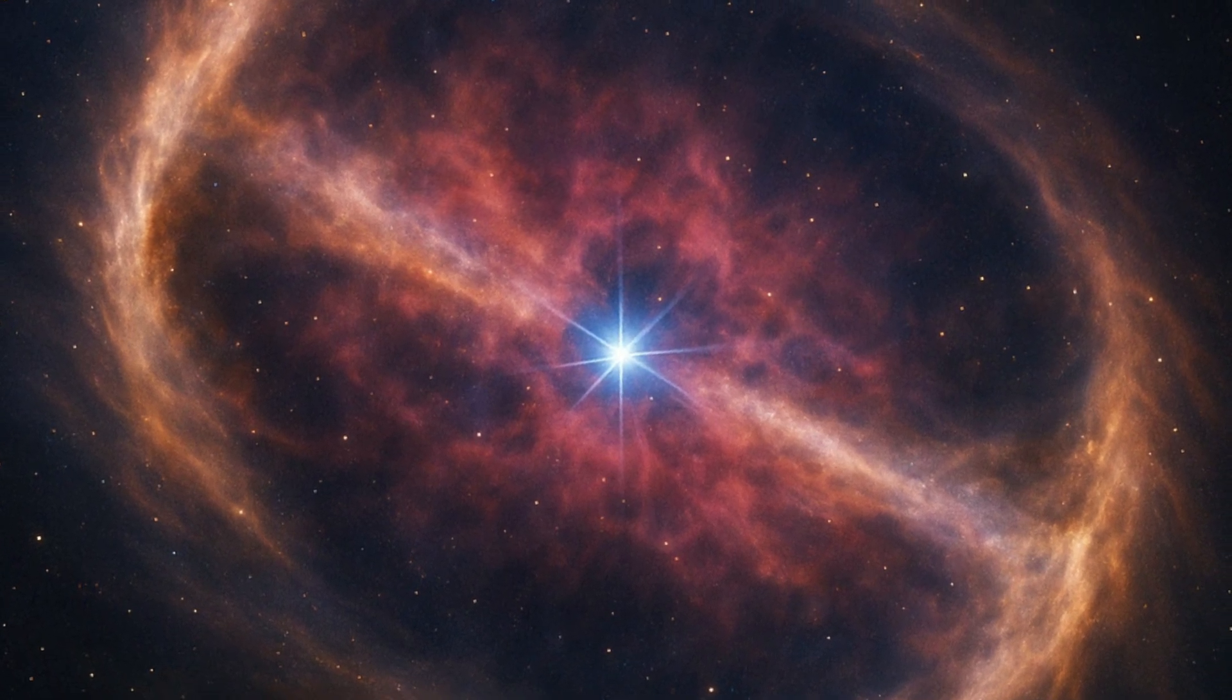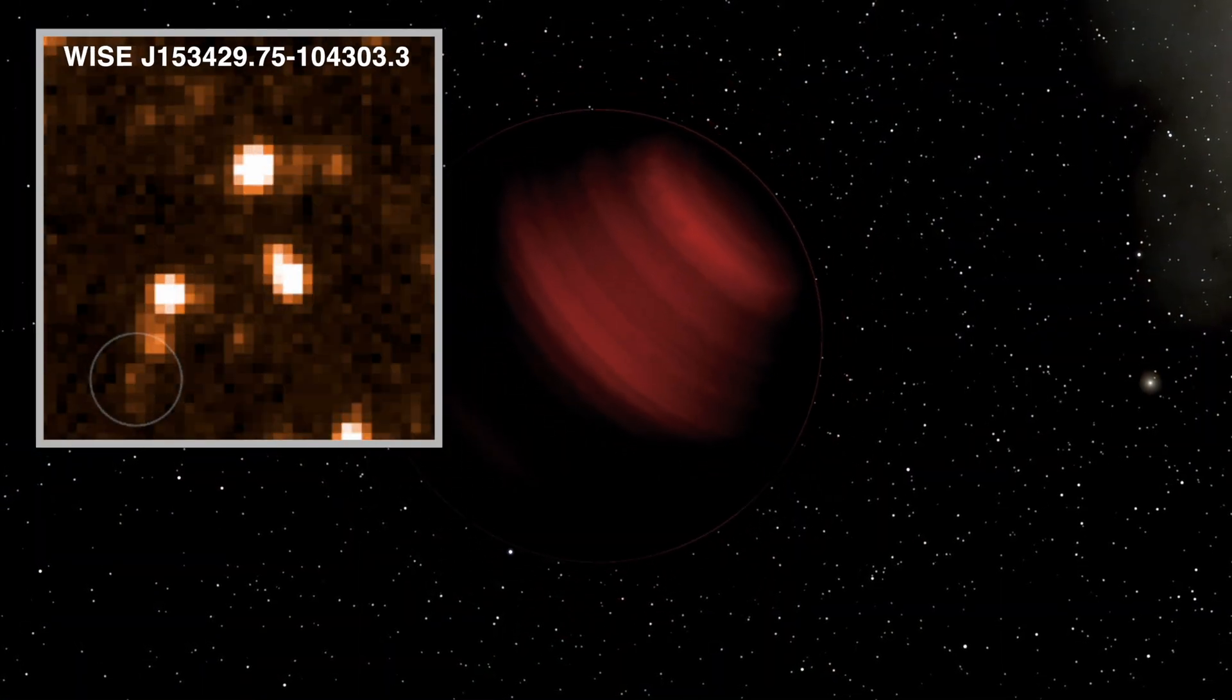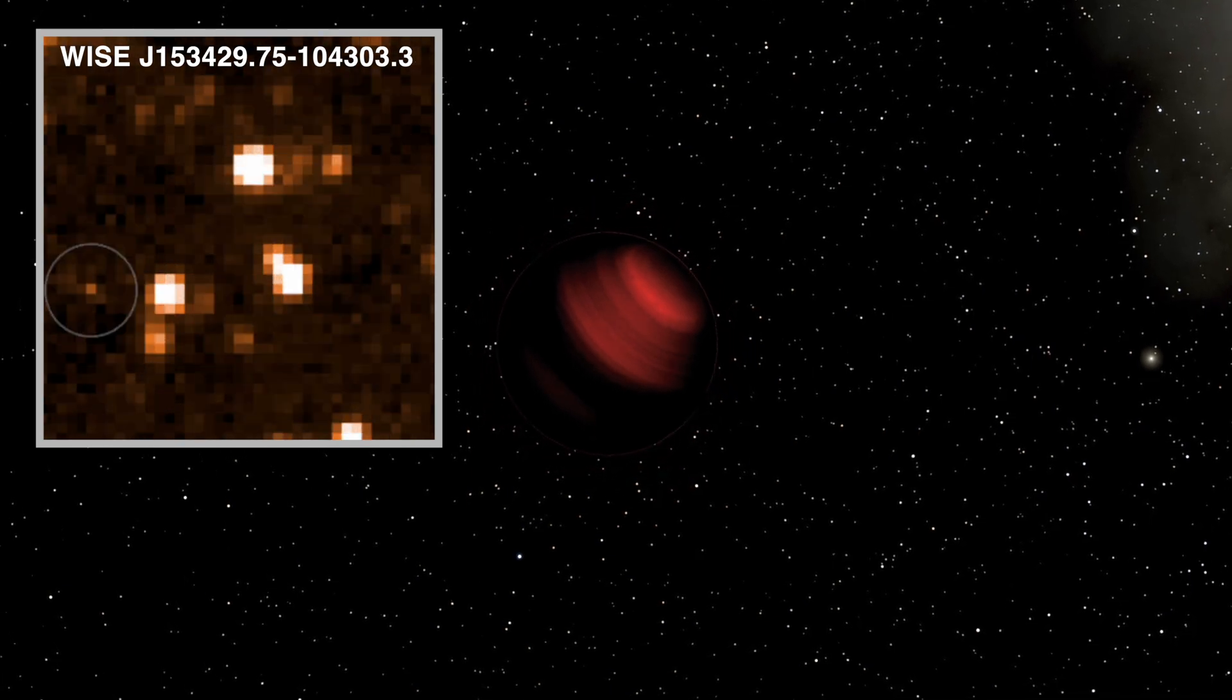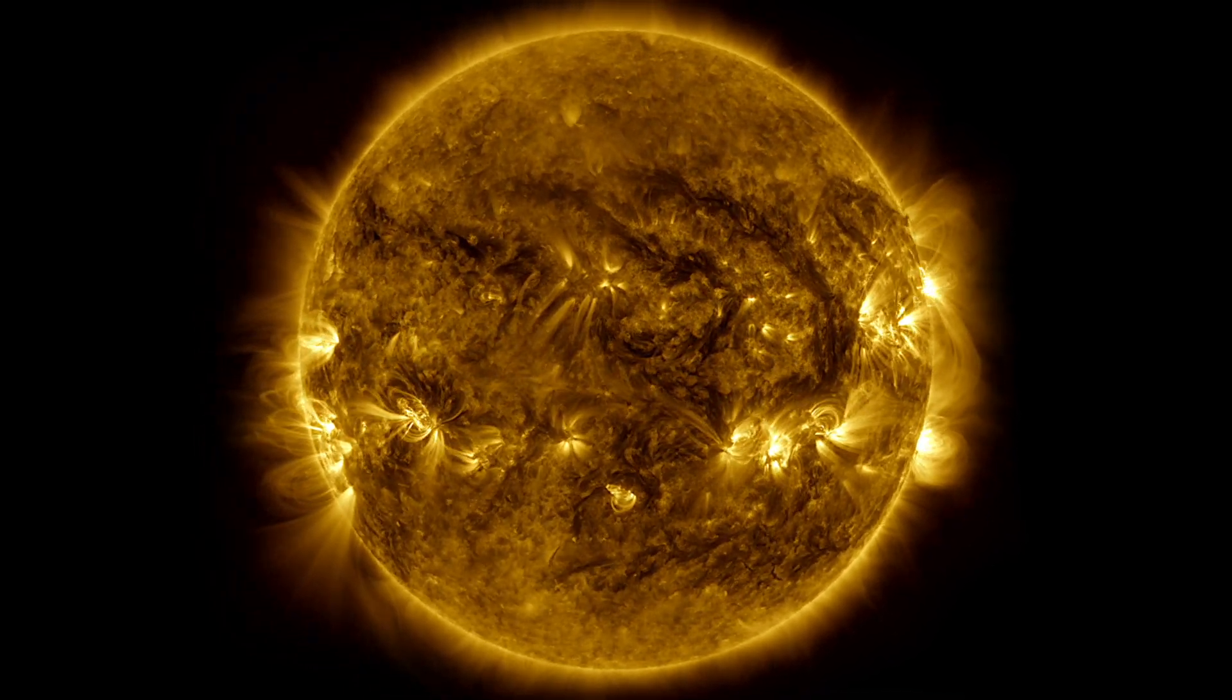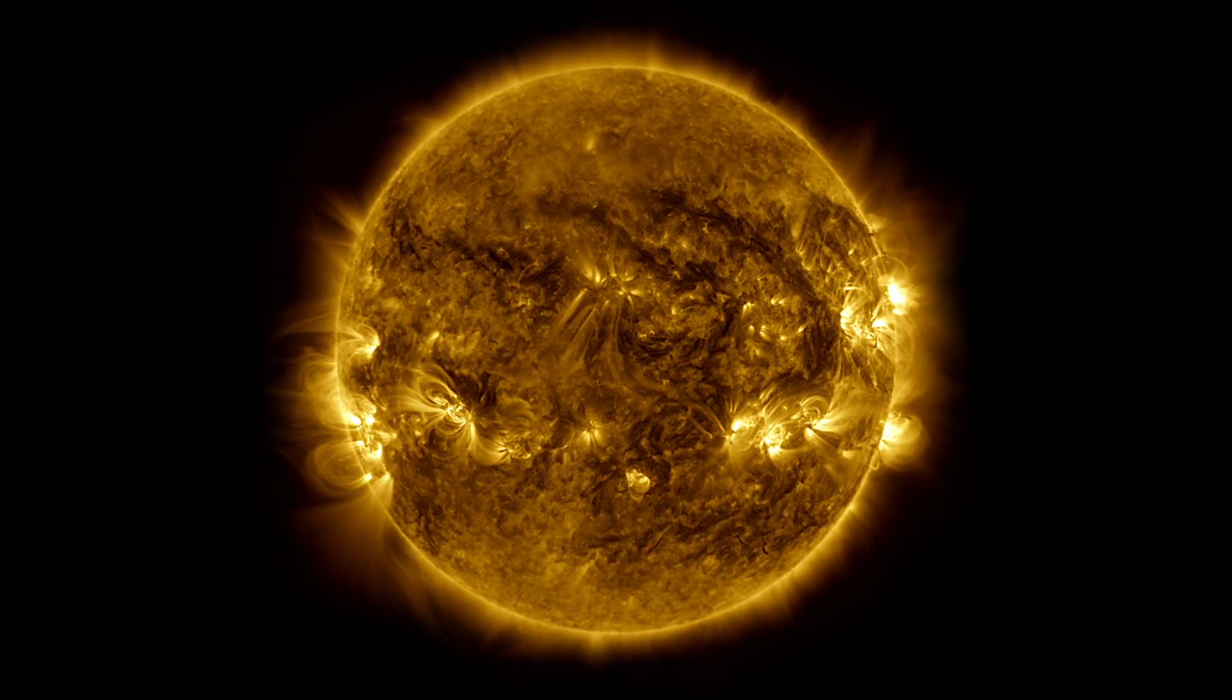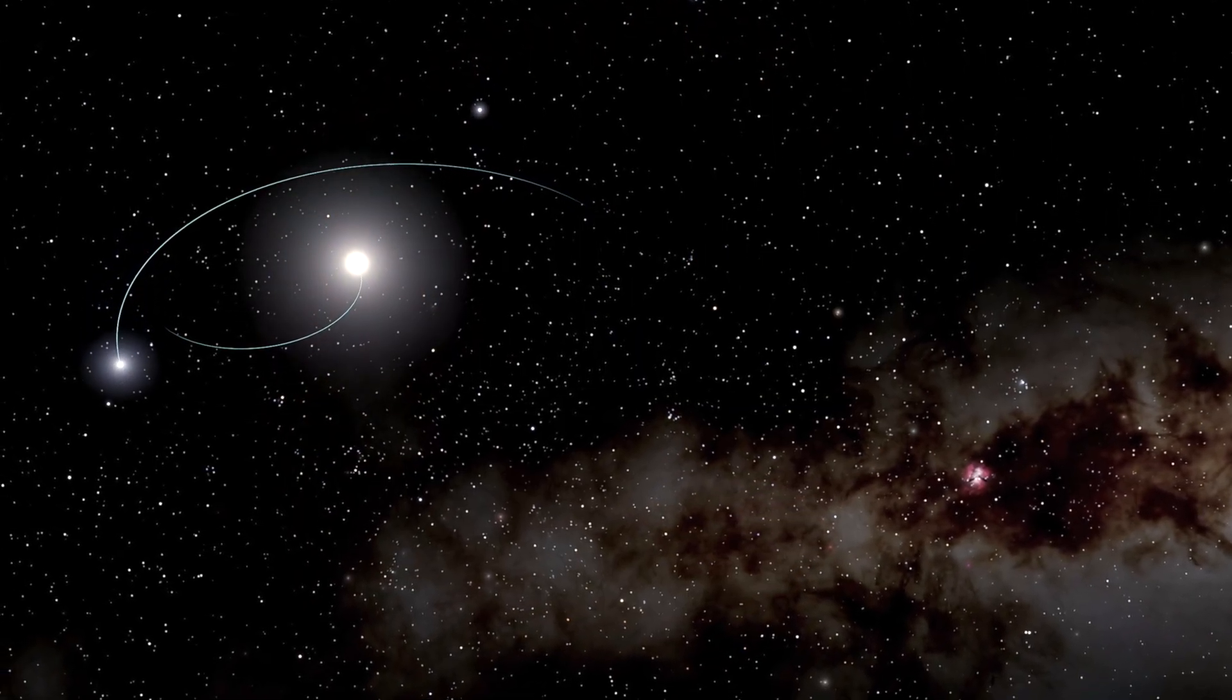But that's not where this story ends. Because Nemesis, real or not, led us somewhere deeper. It opened a door to questions about the solar system's shape, its distant scars, and whether our Sun was ever truly alone. And while the idea of a hidden star still circling the Sun is now largely ruled out, the idea that our Sun had a twin, born with it then lost to the stars, still stands.